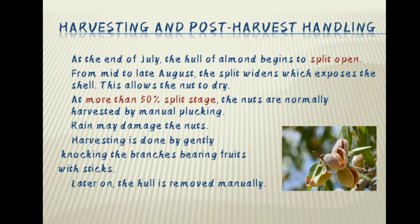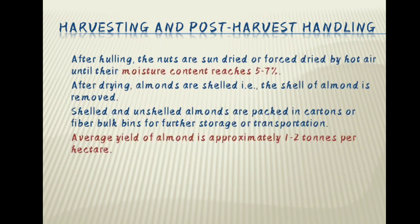Harvesting and post-harvest handling. At the end of July, the hull of almonds begins to split open. From mid to late August, the split widens which exposes the shell, allowing the nut to dry. At more than 50% split stage, the nuts are normally harvested by manual plucking. Rain may damage the nuts. Harvesting is done by gently knocking the branches bearing fruits with sticks. Later on, the hull is removed manually. After hulling, the nuts are sun-dried or force-dried by hot air until the moisture content reaches 5-7%. After drying, almonds are shelled. Shelled and un-shelled almonds are packed in cartons or fiber bulk bins for further storage or transportation. Every yield of almond is approximately 1-2 tons per hectare.